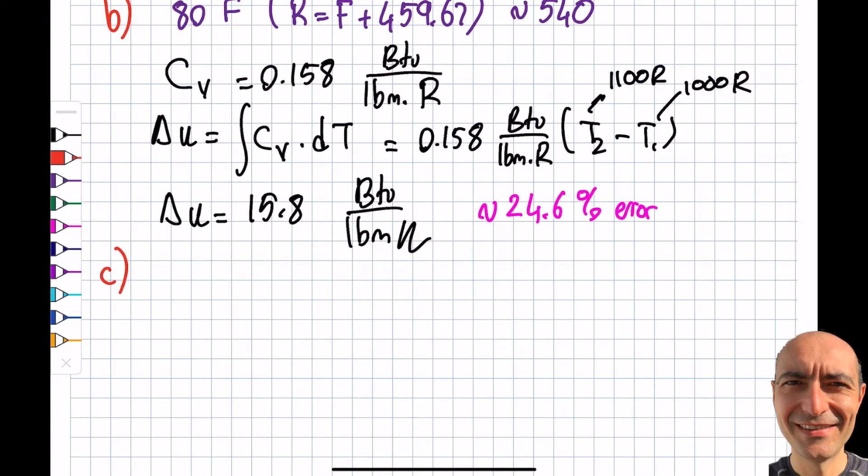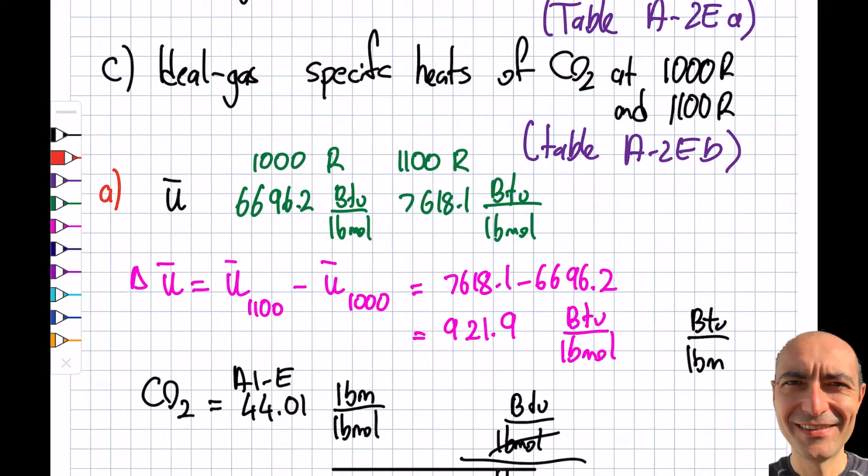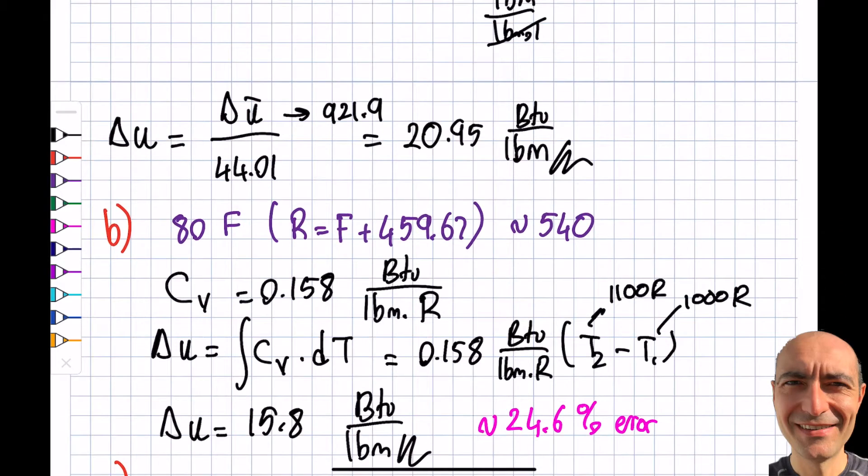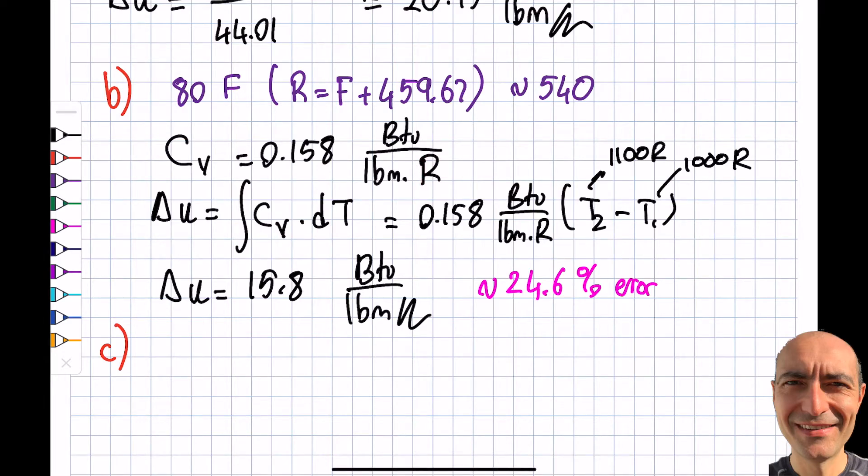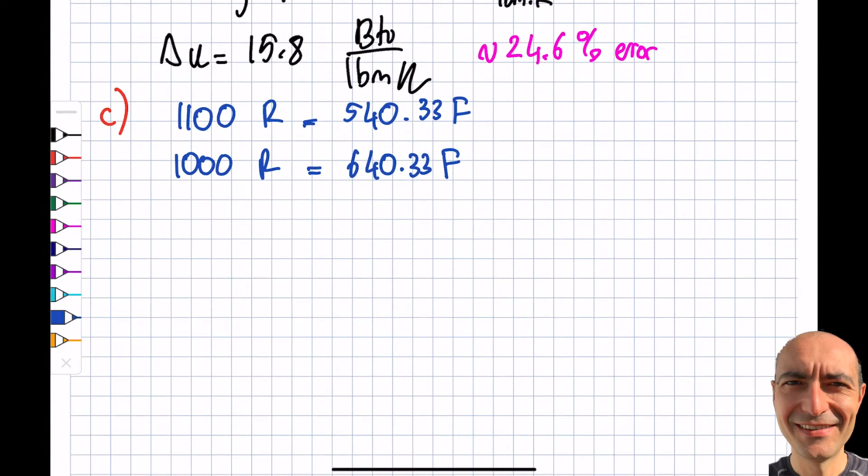Then I look at this particular A-2Eb, and unfortunately it's listed as a function of Fahrenheit, but the unit is given in terms of Rankine. Cv just like what I wrote, it is written with respect to Rankine, but the graph A-2Eb is with respect to Fahrenheit. Now I'm going to convert things to Fahrenheit. I have 1100 and 1000 in Rankine. If I convert this, I'm gonna get 540.33 Fahrenheit and 640.33 Fahrenheit.